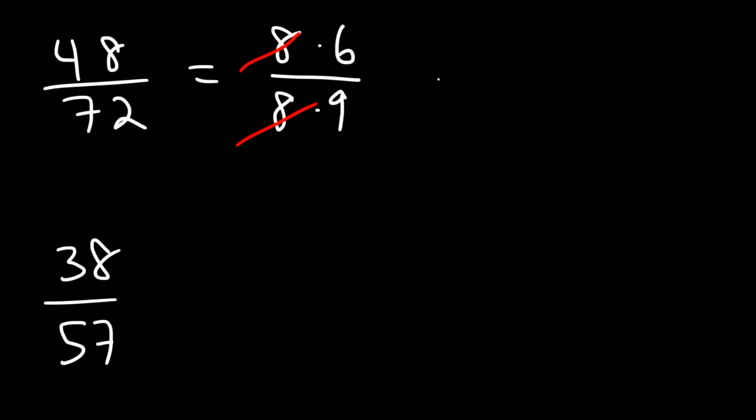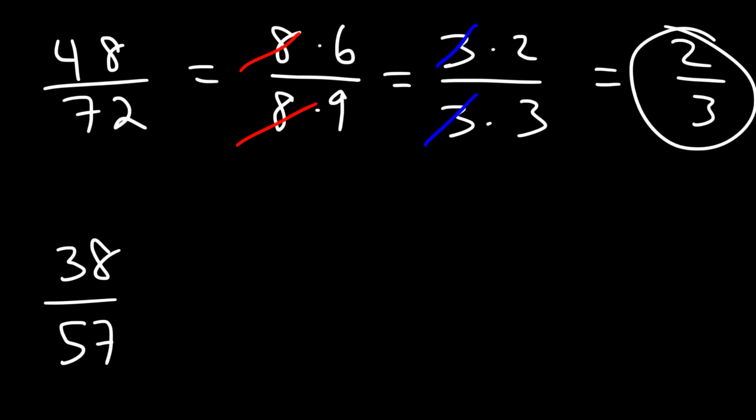Now we could still simplify this further. 6 is 3 times 2. 9 is 3 times 3. And so these can be canceled. Thus the final answer for that problem is 2 over 3.